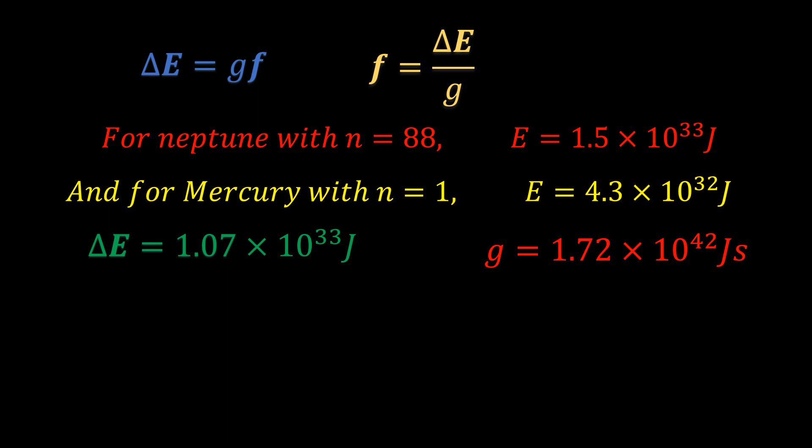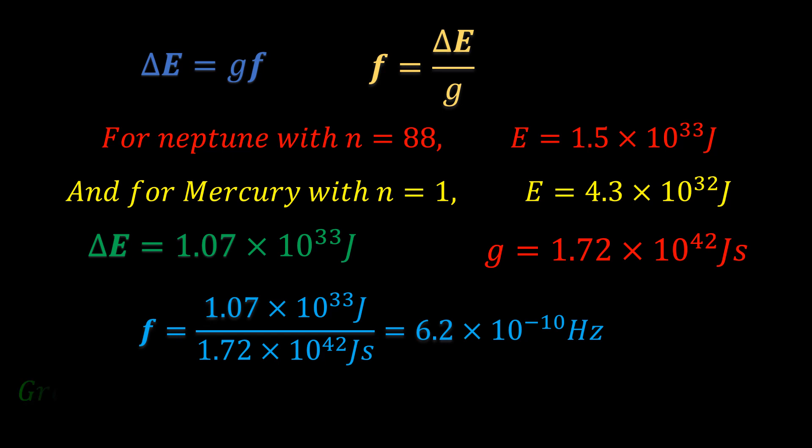G is equal to 1.72 exponential 42 joules second. So the frequency is equal to 6.2 exponential minus 10 hertz. Do you recognize what kind of frequency this is? It falls in the range of frequencies of gravitational waves. The frequency is relatively small because solar systems are also relatively small. Things like black holes and star clusters will produce much larger frequencies, as has already been detected. This again confirms that the planetary model of the atom is correct and accurate, while introducing the equivalence of gravitomagnetic or GM waves, also known as gravitational waves, with electromagnetic or EM waves.